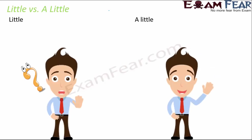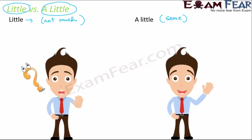Let us distinctly see how we differentiate between the usage of 'little' and 'a little.' They sound similar and we often use them interchangeably, which is incorrect because they have different meanings. We use 'little' when we want to denote something which is not much or almost nothing. Whereas 'a little' denotes some amount — even though it is a small amount, it is considerably some amount. So 'a little' denotes something larger in quantity than 'little.'